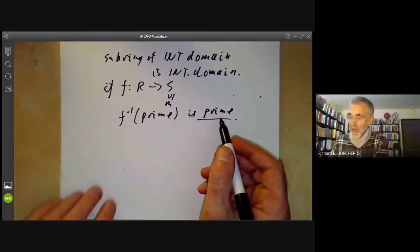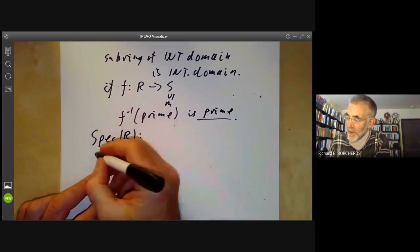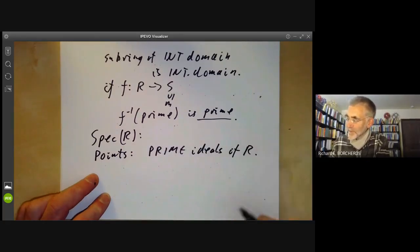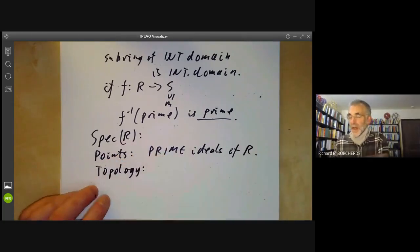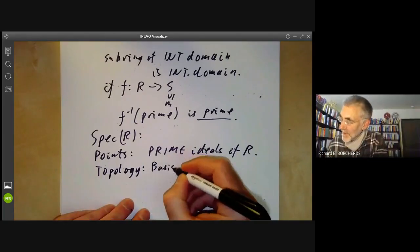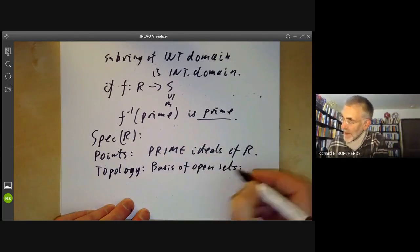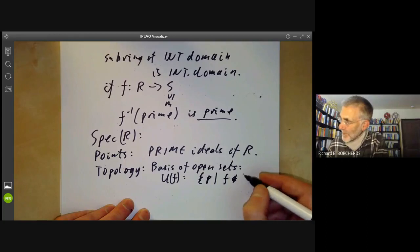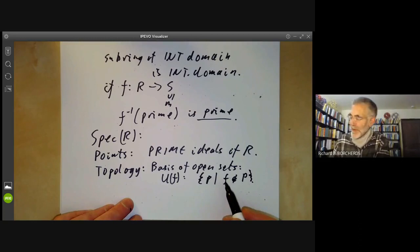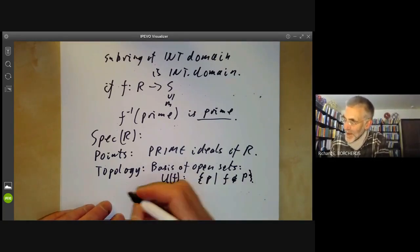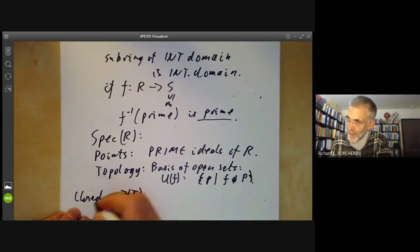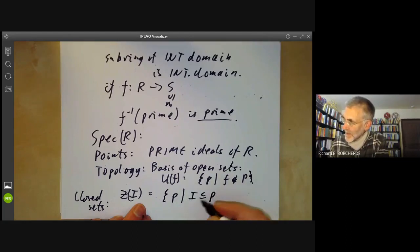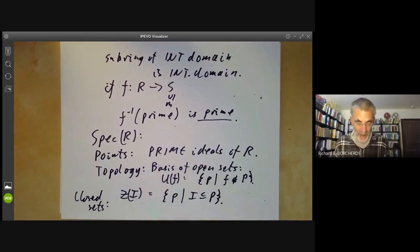This suggests that we shouldn't work with maximal ideals but with prime ideals. So we define the spectrum of R as follows: the points correspond to prime ideals of the ring R. The topology is defined in either of two ways: we can choose a basis of open sets given by U_F, the set of prime ideals P such that F is not in P — informally the points where F is nonzero — or for any ideal I, the closed sets are of the form Z(I), the set of prime ideals P such that I is contained in P.